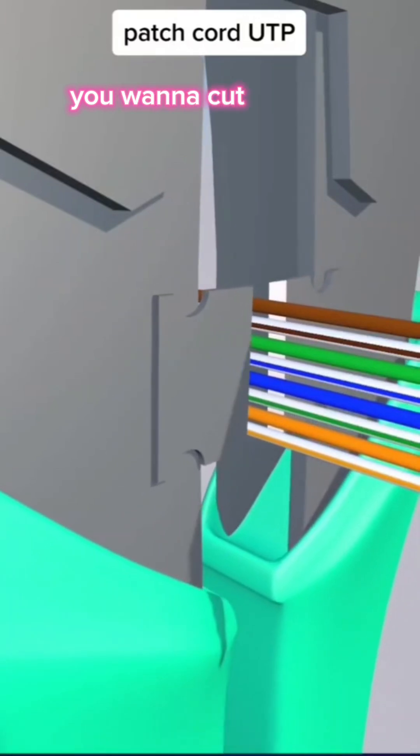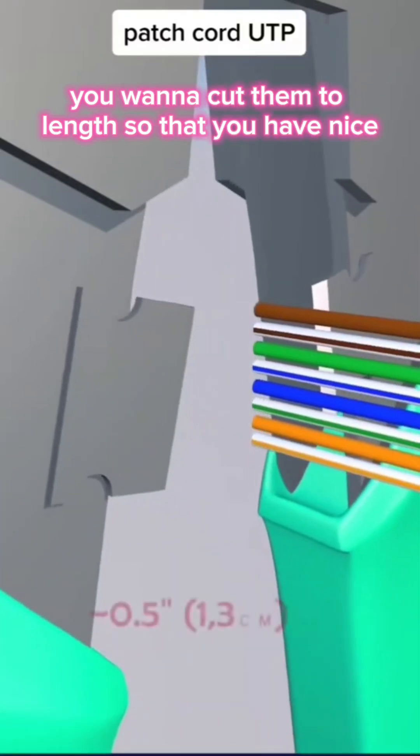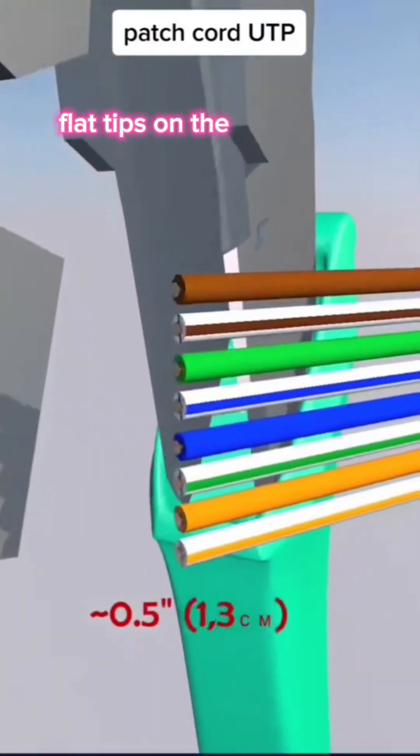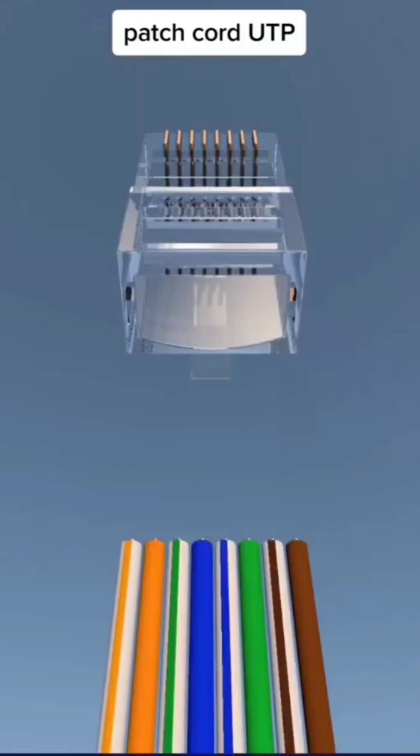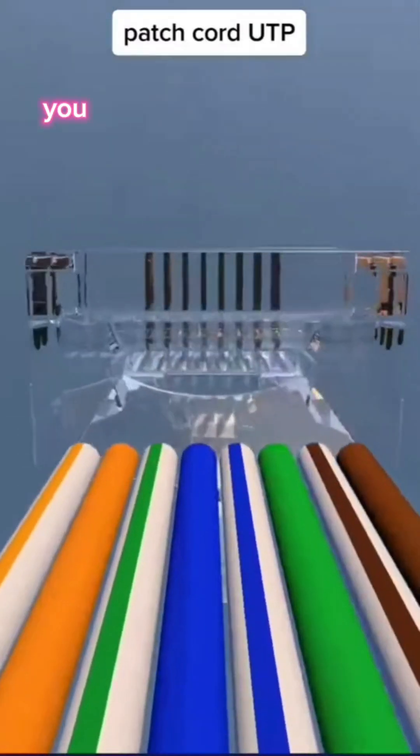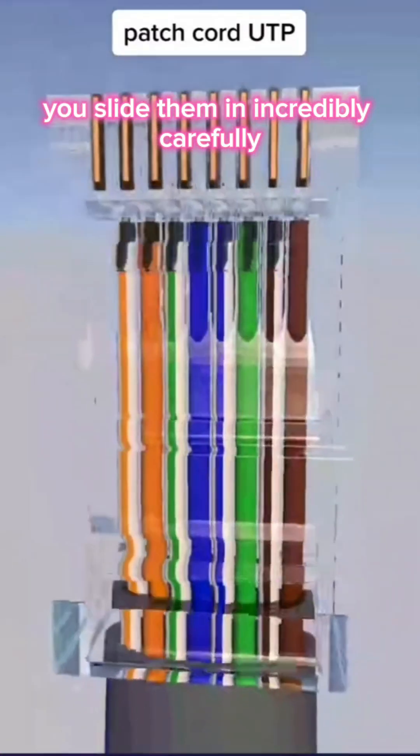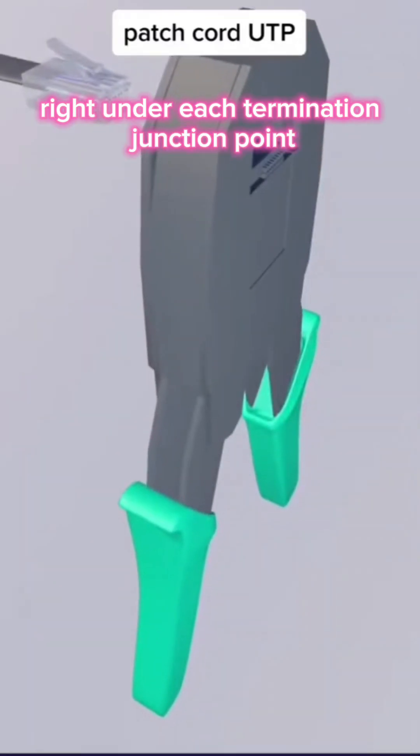Right. Next step, you want to cut them to length so that you have nice, even, flat tips on the edge. Perfect order. You slide them in incredibly carefully. Make sure they go into their slots right under each termination junction point.